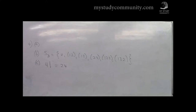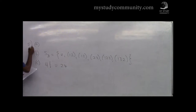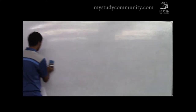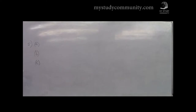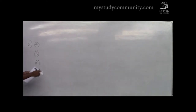Question 5 is just application of everything we've done with permutations, cycles, and so on. We have two permutations alpha and beta. Part A: write alpha and beta as products of disjoint cycles. I'll just write the answers — but if you want me to explain it, I can.